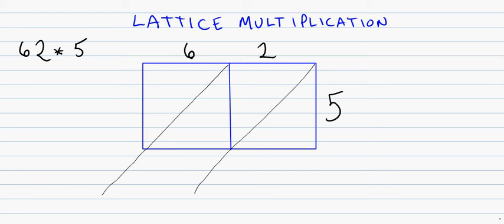Now we're going to demonstrate a method that should be a review from the third grade, and that's lattice multiplication. We're taking this problem here, 62 times 5, and we're going to multiply it using lattice multiplication. It involves the use of this grid here.